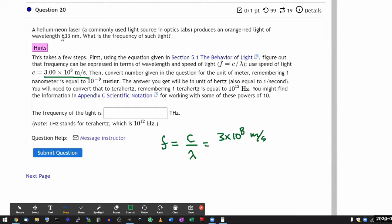I'm giving it here, 633 nanometers. And then it says, remember, 1 nanometer is equal to 10 to minus 9 meters.